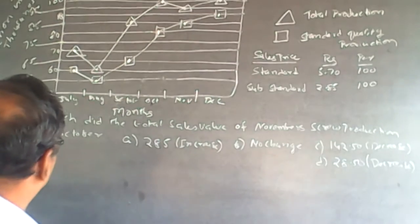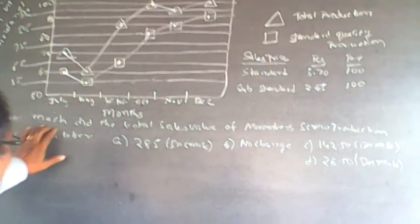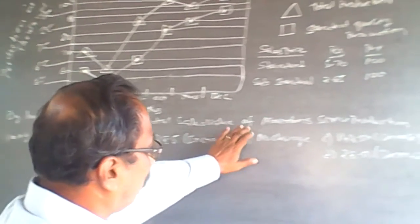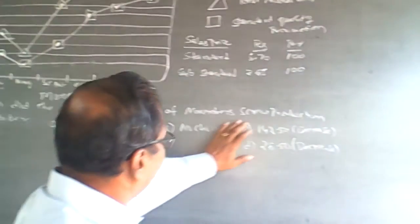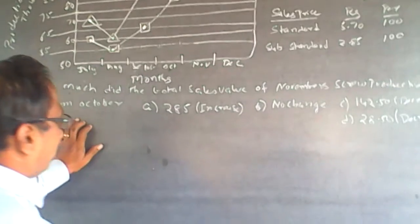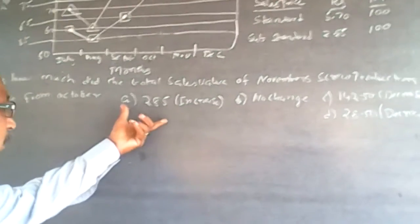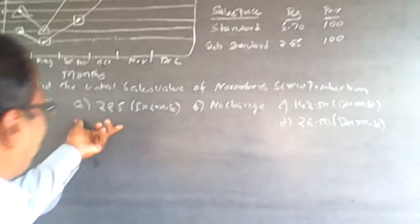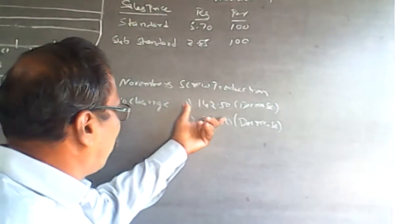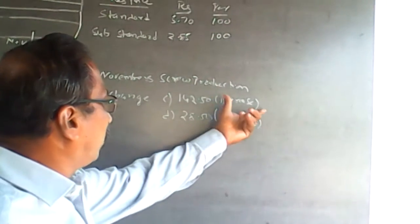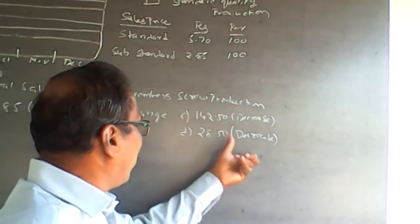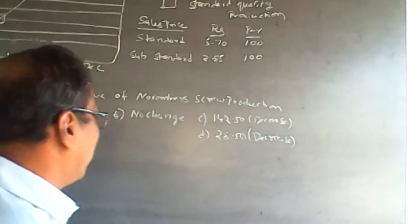The question is: by how much is the total sales value of November screw production vary from October? Options are: A — 285 increase, B — no change, C — 142.50 decrease, and D — 28.5 decrease.